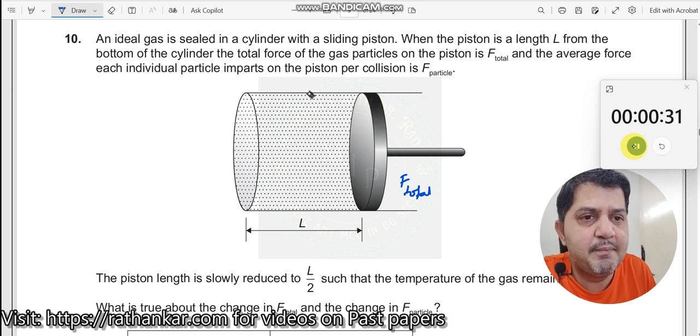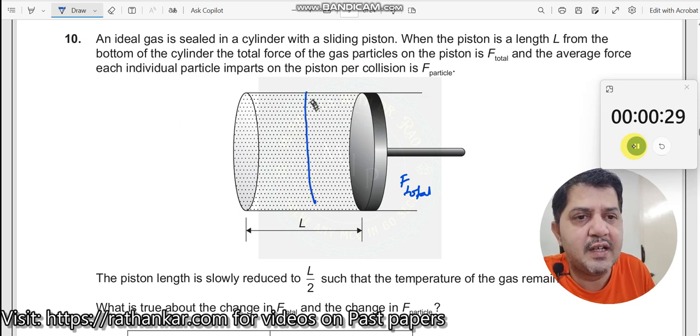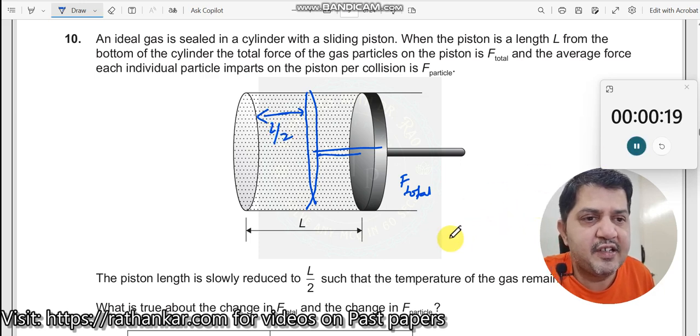So what do I do? I compress this piston length. The piston becomes something like this. This becomes L by 2. And the temperature of the gas remains constant.